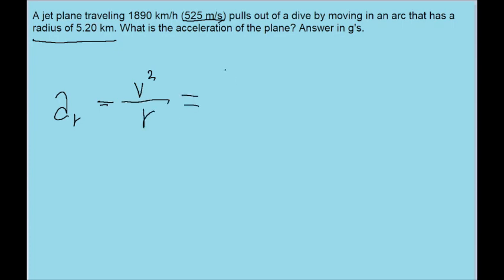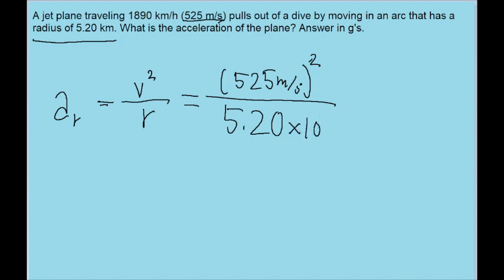Now the speed given to us is 525 meters per second, and that's squared, and then we divide this by the arc radius, which is given in kilometers, but we'll need to multiply this by 10 to the power of 3 to convert it into meters.